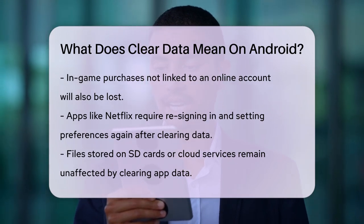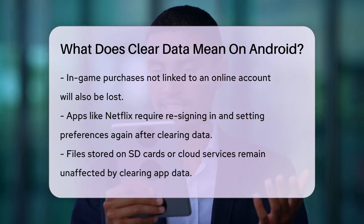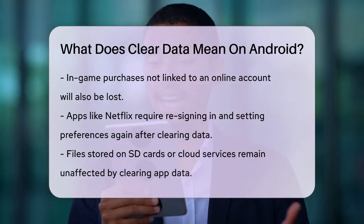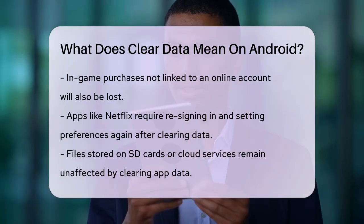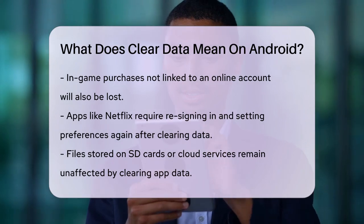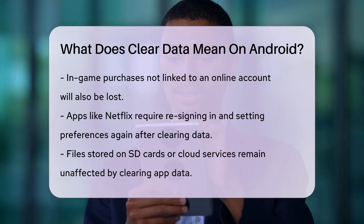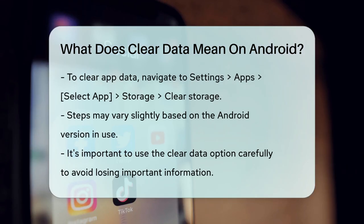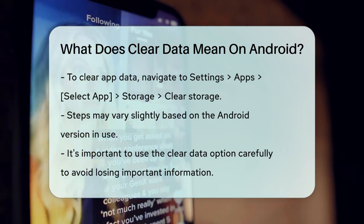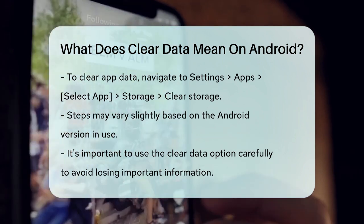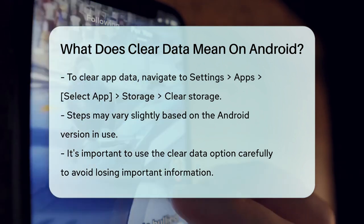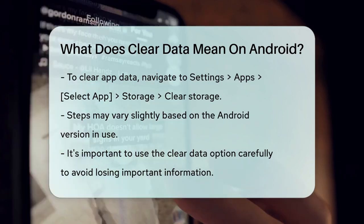To clear the data of an app, go to your device's settings, select the apps menu, choose the app you want to clear, go to the storage tab, and then select the clear storage or clear app data option. This process varies slightly depending on your Android version, but the steps are generally the same.